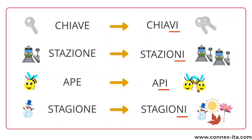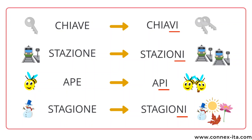The following words are feminine, but in the plural they also end in I. Chiave is 'the key', and chiavi are 'the keys'. Stazione refers to 'the train station', and in the plural becomes stazioni. Ape means 'bee', and its plural is api. Then stagione is 'the season', and stagioni are 'the seasons'. Chiavi, stazioni, api, stagioni.